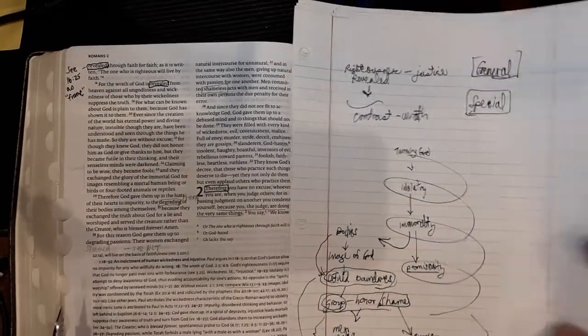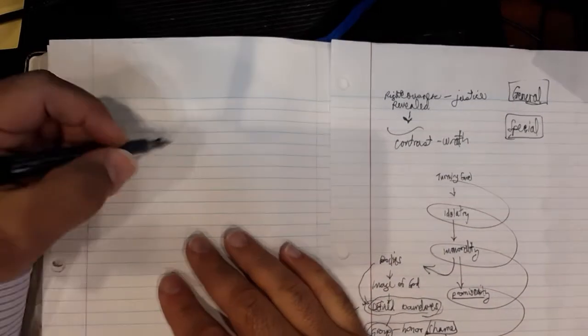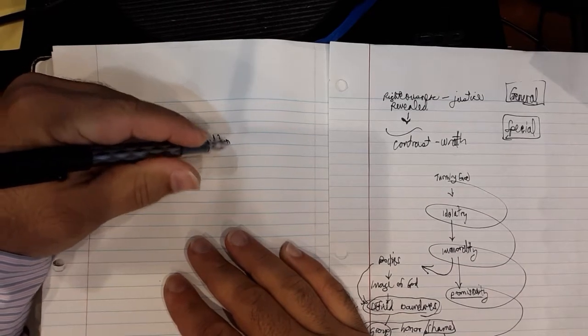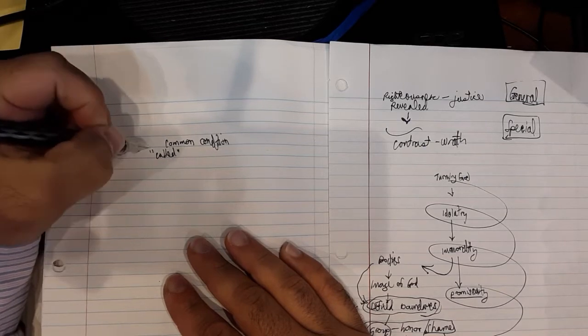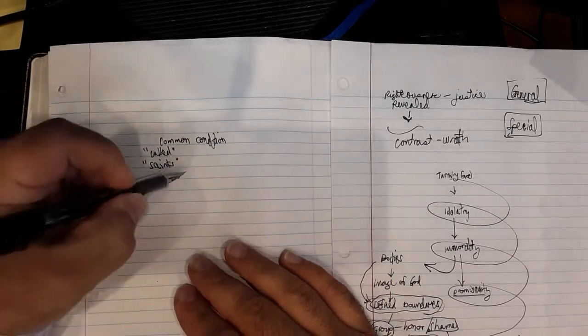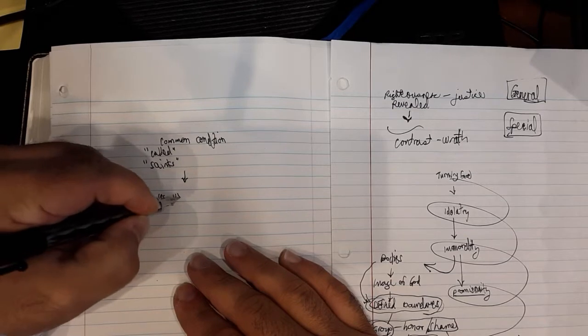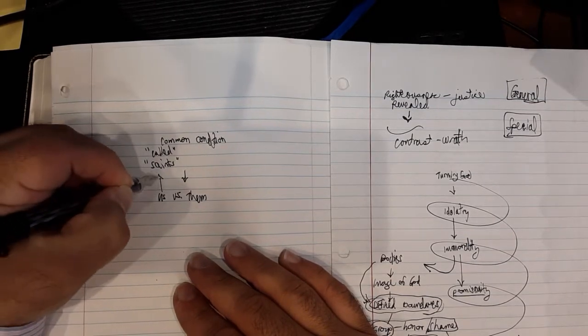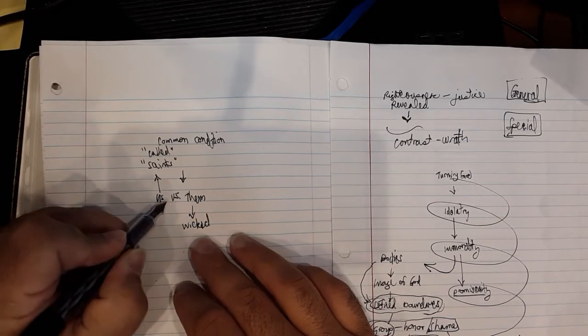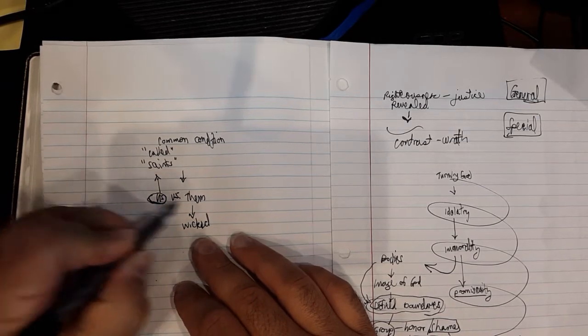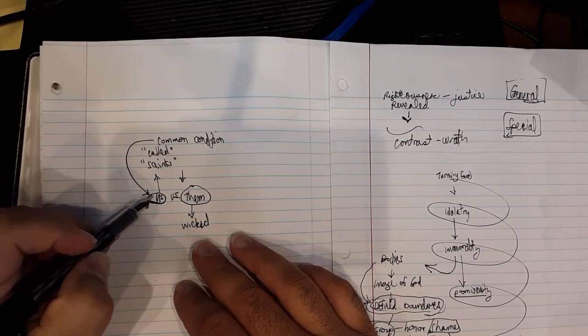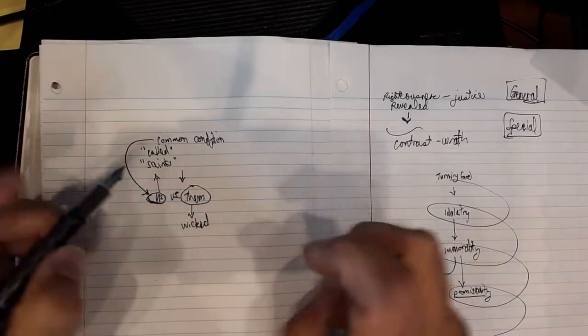And I say that at the outset because Paul's job right now is to unite these two factions by showing their common condition. And what he's going to do is he's already called the church called ones in chapter 1, verses 1 through 16. He called them saints, which is holy ones, called out ones. And what he's going to do here is he's going to create an us versus them paradigm. We are saints and called out. They are wicked.